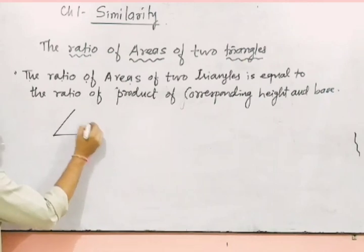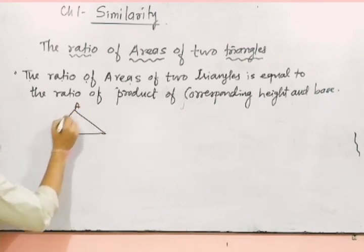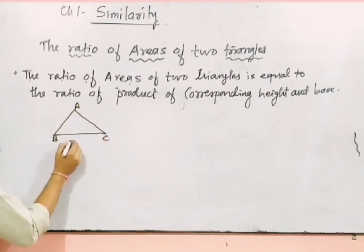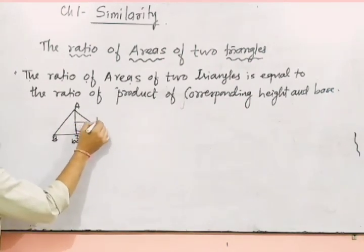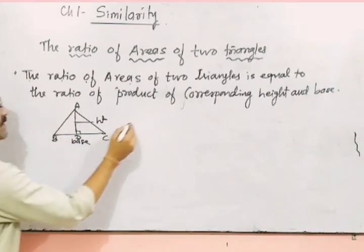This is one triangle, acute triangle ABC. This is base and this is height. AD is what? Height.